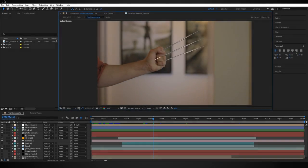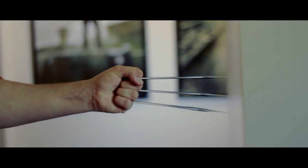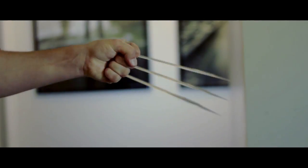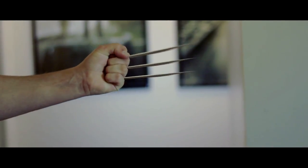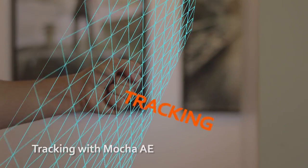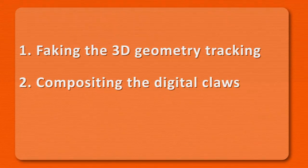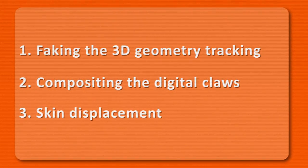Hey guys, welcome back to another tutorial. Today we're going over a pretty widely requested effect: the popular Wolverine claws. What's going to be covered in this tutorial is the faking of the 3D geometry, tracking, the compositing of the digital claws, and then the skin displacement for when the claws go in and out of the hand.